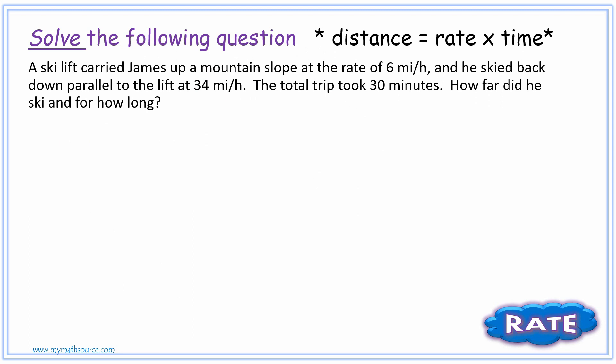In this problem, we're going to look at how we can utilize one of those motions to solve what can be looked at as a complex question, but really is not. This problem says a ski lift carried James up a mountain slope at the rate of 6 miles per hour. And he skied back down parallel to the lift at 34 miles per hour. The total trip took 30 minutes. How far did he ski and for how long?